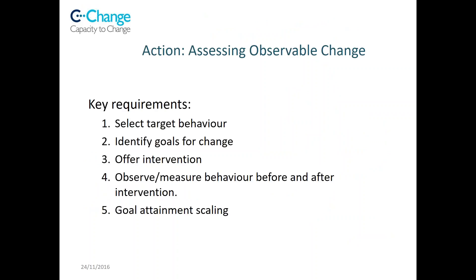The second element involves a systematic look at what parents can do to turn things around. Key requirements are: select a behaviour important to examine that is likely to make a difference to the child's wellbeing; identify clear goals for change; offer an intervention to support it if possible; and measure or observe what happens as a result. One particular approach we include is goal attainment scaling, which sets goals, rates them, then observes and rates the outcomes.